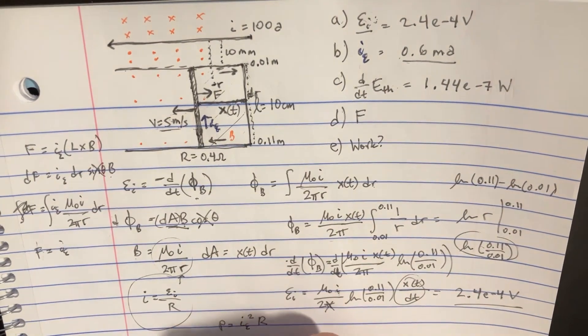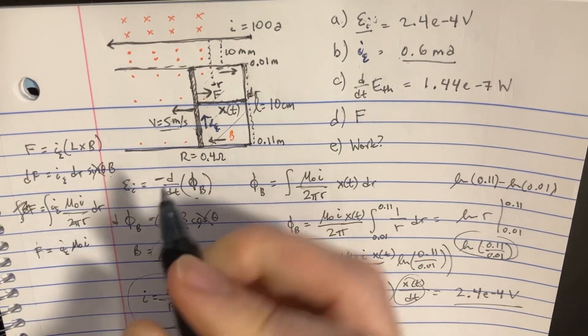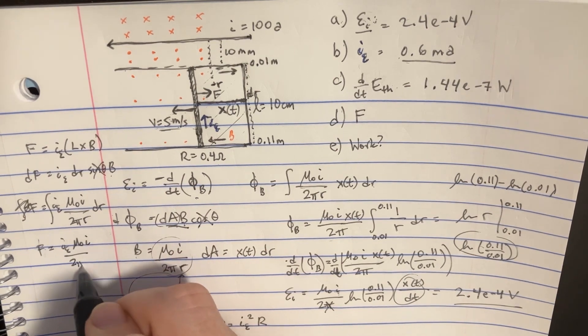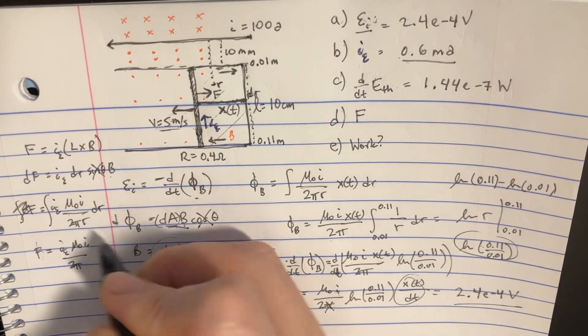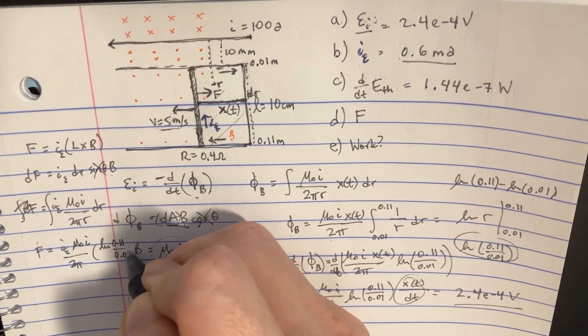induced current, mu naught, this i over here. Those two i's are different, by the way. Divide this by the 2 pi. And then this integral is just going to be ln of 0.11 divided by 0.01.